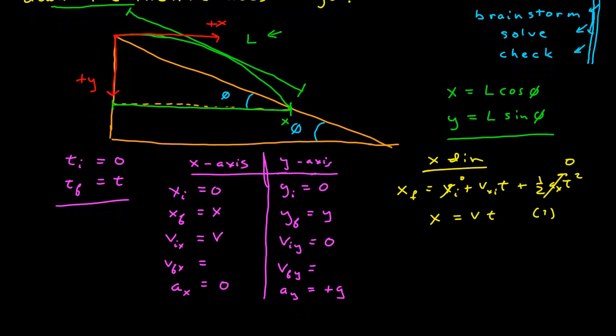If we look in the y-direction, we have the similar relationship. Final is y initial plus the initial y velocity t plus one-half y acceleration t squared. And so here, this is zero and this is zero. And so we have our y is equal to one-half g t squared. And it's positive because the ay is positive.